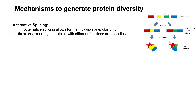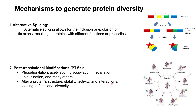The next mechanism is post-translational modifications, or PTMs. Proteins can undergo a wide range of PTMs such as phosphorylation, acetylation, glycosylation, methylation, ubiquitination, and many others. These modifications can alter protein structure, stability, activity, and interactions, leading to functional diversity.